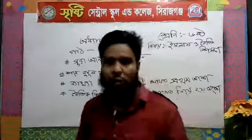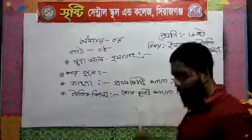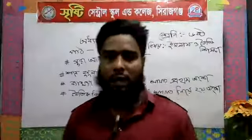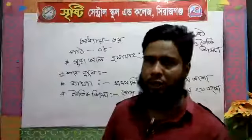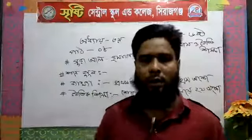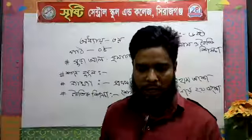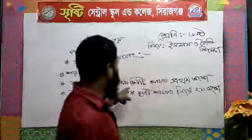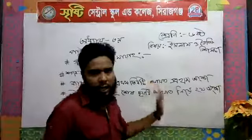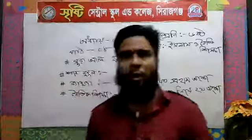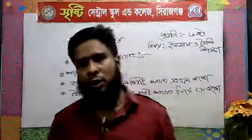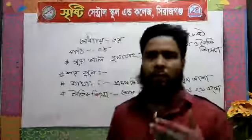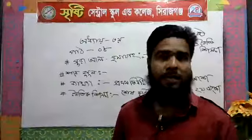E, khani, dhakho, je protham onksha, pprotham tin tin ayaat e Allah, kye bolche? The first three ayaat — what is Allah saying? The first three items are made of paper and the second one is also made of paper.